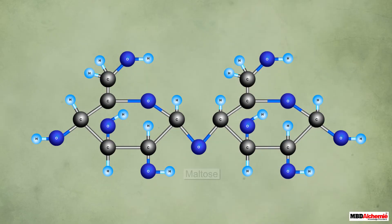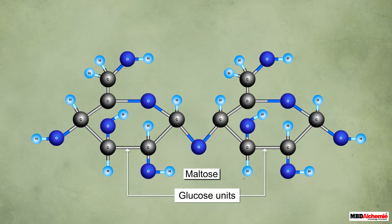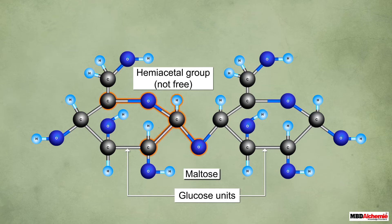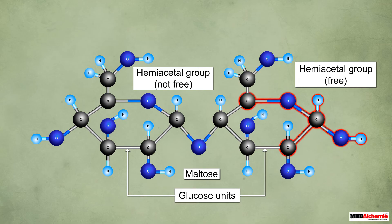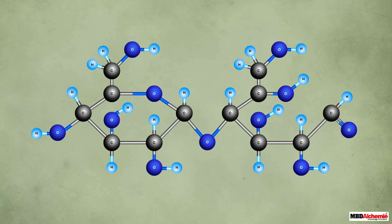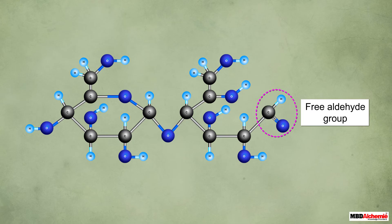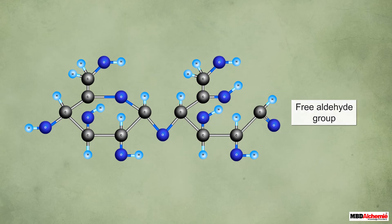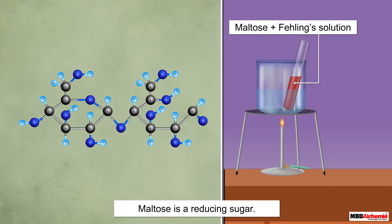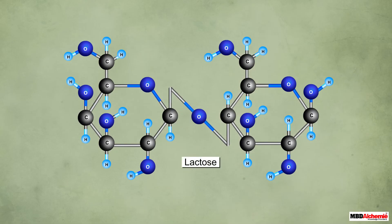Another example is maltose, which is a disaccharide. Maltose has two glucose units joined together by a glycosidic bond. The hemiacetal group of one of these glucose units takes part in the glycosidic bond formation, whereas the hemiacetal group of the other glucose unit remains free. In the solution of maltose, the ring of the glucose unit with a free hemiacetal group opens up and the free hemiacetal group changes to a free aldehyde group. The free aldehyde group enables maltose to be oxidized by Fehling's solution, thus making it a reducing sugar.